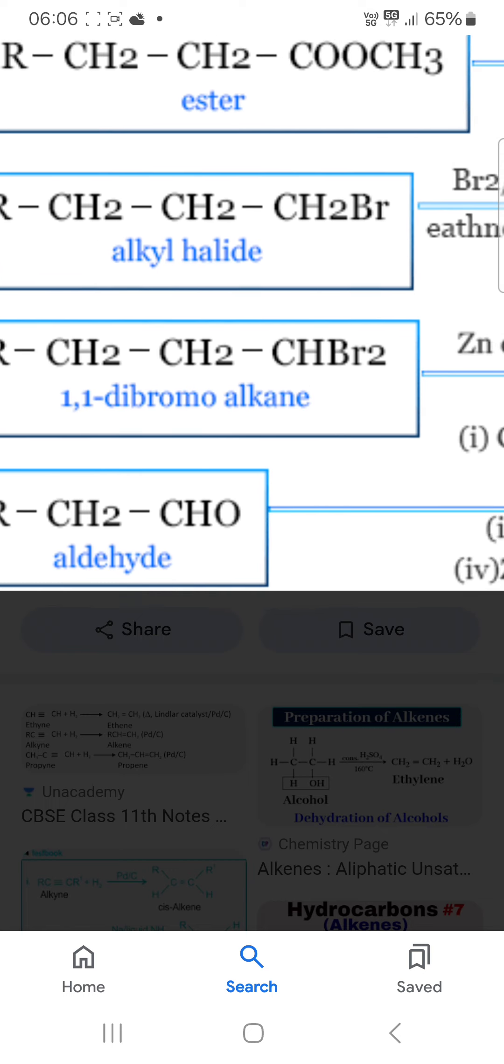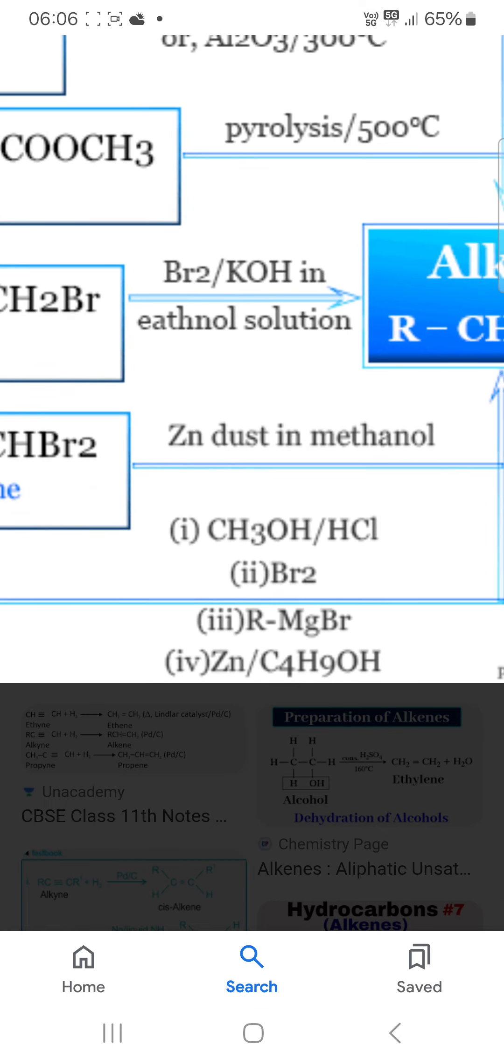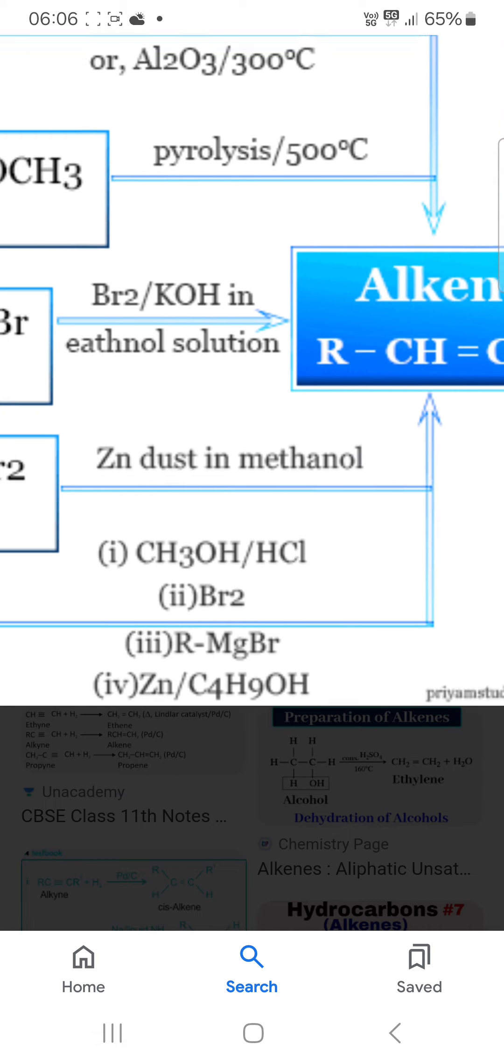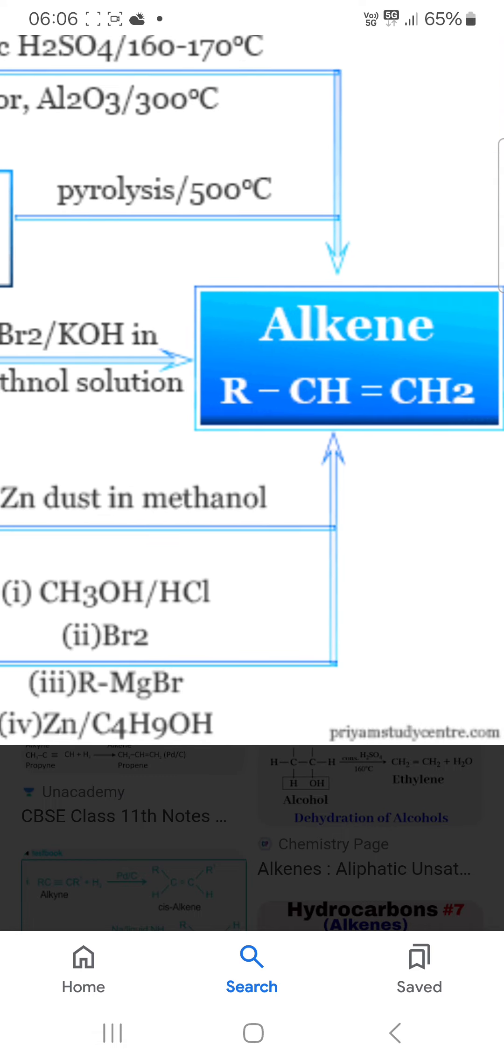The next method from aldehyde: first methanol and hydrochloric acid, in second step molecular bromine, third R-MgX Grignard reagent, and fourth zinc and butyl alcohol. You will get this alkene.